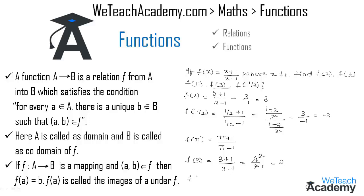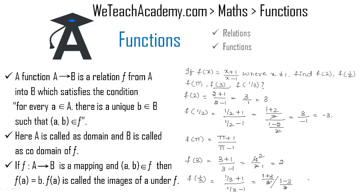Now let us find the value of f(1/3). By replacing x with 1/3 we get (1/3 + 1)/(1/3 - 1). Taking LCM in numerator and denominator we get (1+3)/3 divided by (1-3)/3. The 3's cancel, giving us 4/(-2) = -2. So f(1/3) = -2.